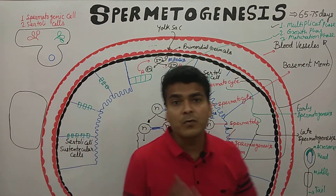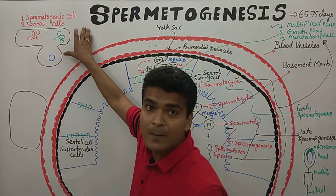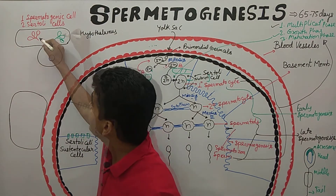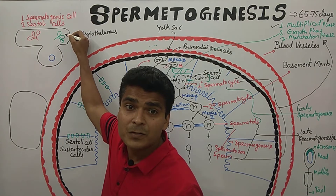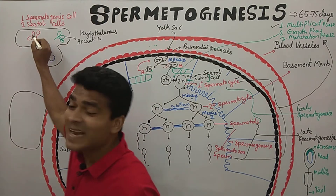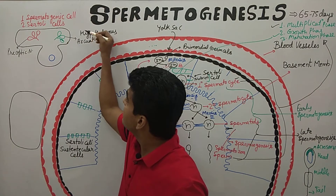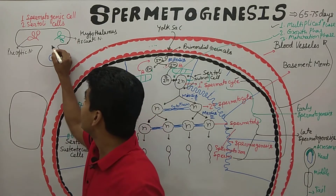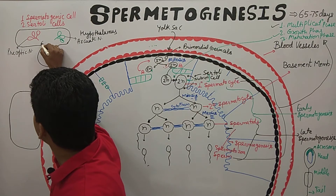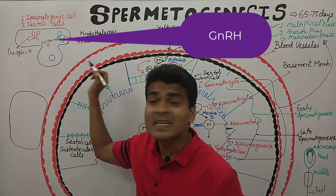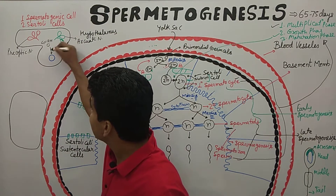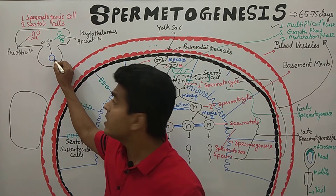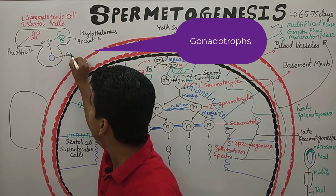Hormone control is very important. We have the hypothalamus, which contains two types of cells. The green color structure is the arcuate nucleus and the red color cell is the preoptic nucleus. Both the arcuate nucleus and preoptic nucleus release a hormone known as GnRH — Gonadotropin Releasing Hormone.